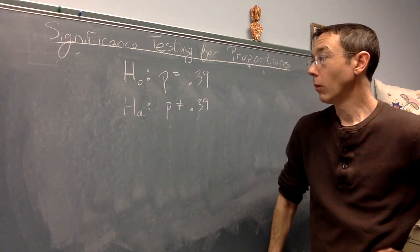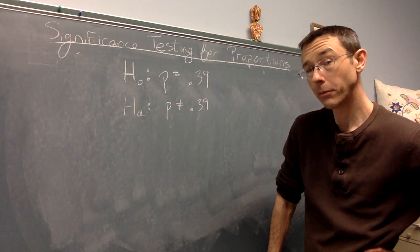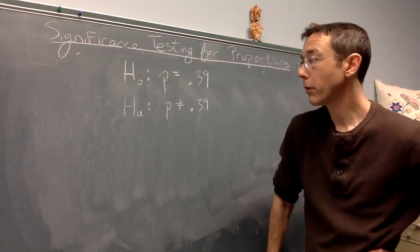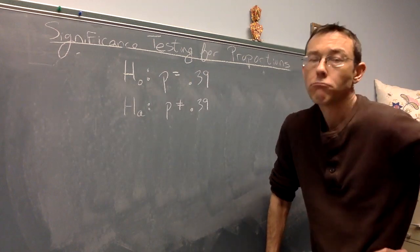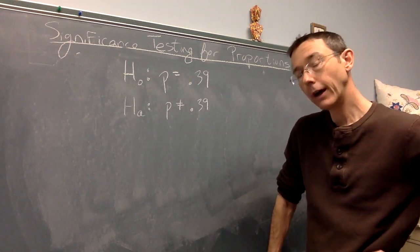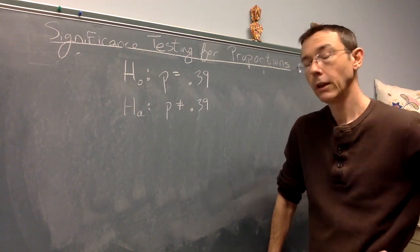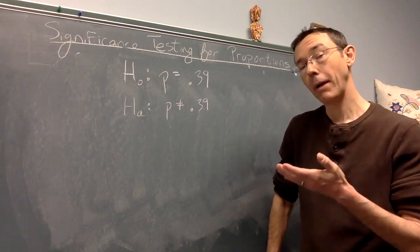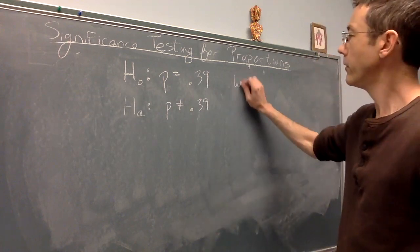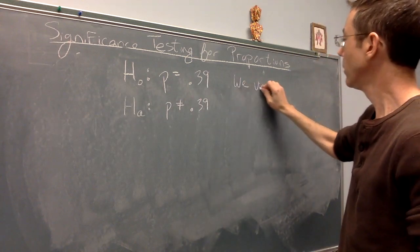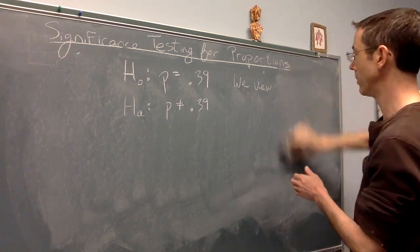Great. So we assume the null hypothesis. We assume that the population proportion is actually 39%. And we want to calculate the probability of getting a p hat, like the one we got, or more extreme, just by random chance. So in order to evaluate that probability, we're going to have to say something about the sampling distribution of p hat. That requires us to step back and think about what that might look like.